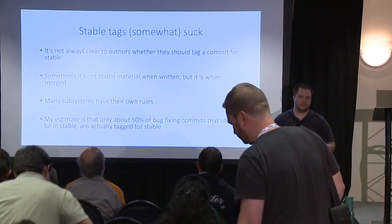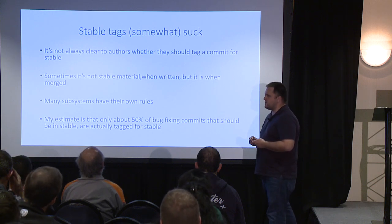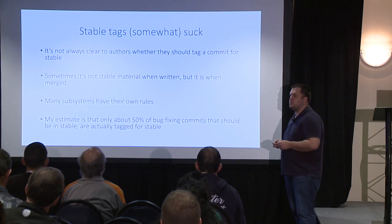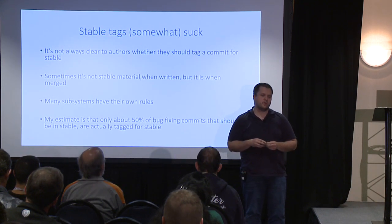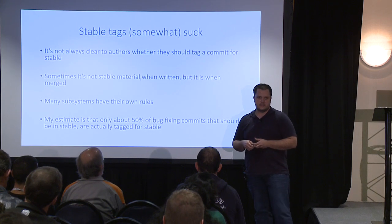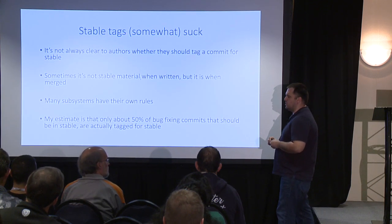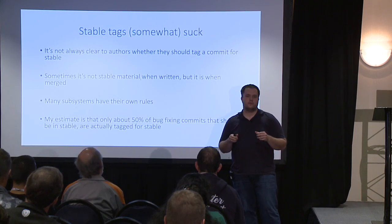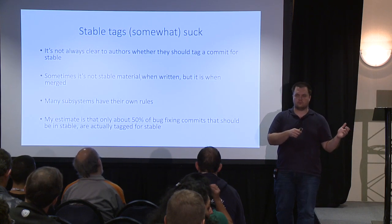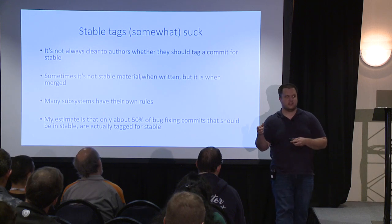Stable tags are also not the best way to get patches into stable trees. They have a few problems. First, some authors don't know whether they should add a tag or not. Adding a tag might depend on the subsystem — if you send patches to David Miller, he might ask you not to tag stuff for stable because he will do it himself. This leads to cases where people play it safe and don't tag any patches for stable at all because they don't want to get yelled at.